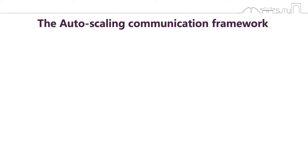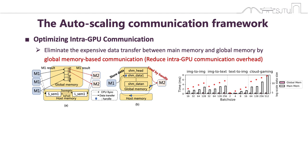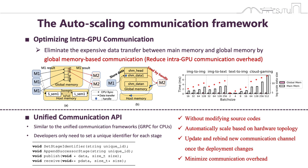An auto-scheduling communication framework is required so that microservices are able to communicate with each other without modifying source code. We optimize intra-GPU communication by proposing global memory-based communication, which eliminates the expensive data transfer between main memory and global memory for microservices on the same GPU using CUDA IPC. Global memory-based communication greatly reduces the overhead, and the larger the data is, the more performance gain is achieved. We also propose a unified communication API for programmers, where developers only need to set a unique identifier for each stage and specify the following stage by appending a successor stage.